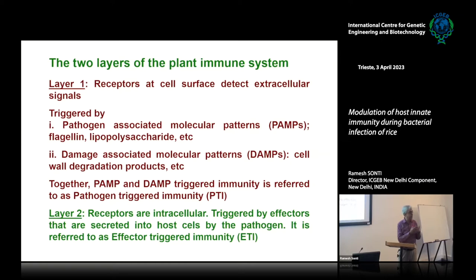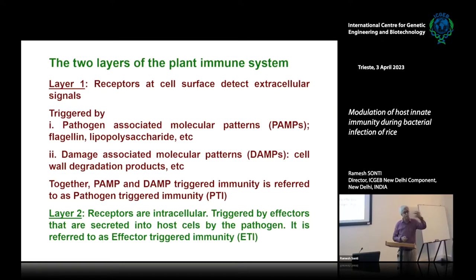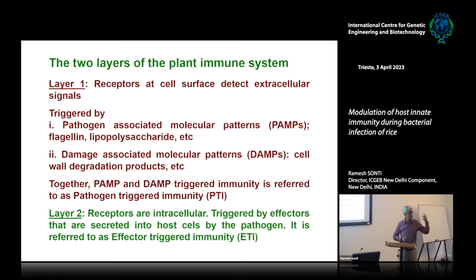Lipopolysaccharide is present in all gram-negative bacteria, and recognition of certain constituents of the lipopolysaccharide triggers an immune response. By recognizing flagellin, the plant is able to recognize when a bacterium is around. Lipopolysaccharide tells the plant that a gram-negative bacterial pathogen is around. Plants also have receptors for chitin, which is present in many fungal cell walls. These are molecules that plants have learned to recognize as indicators of the presence of a microbe. The plant can then make a decision about inducing the immune system. These are the pathogen-associated molecular patterns.